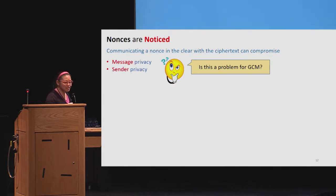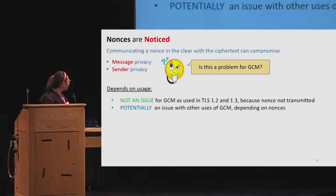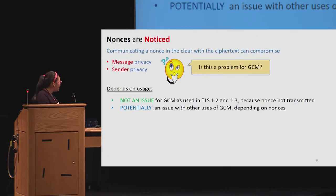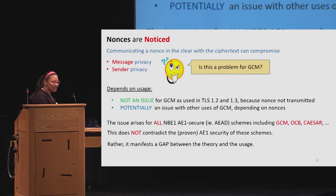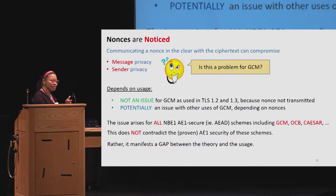The natural question is what impact does this have on GCM and TLS — are we completely screwed? No, it's not a problem in TLS, because in TLS the nonce is not transmitted in the clear. But it may be a problem in other uses of GCM or other NBE1 schemes, because the attack sketched here can be extended to any NBE1 scheme that chooses to send the nonce in the clear. It's not that this shows AE1 security does not hold — it just says there's a gap between how we thought about it and how it's actually being used.